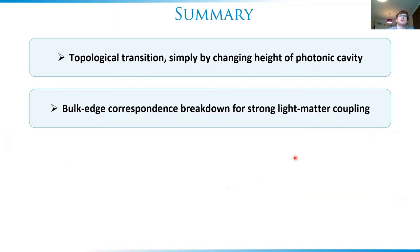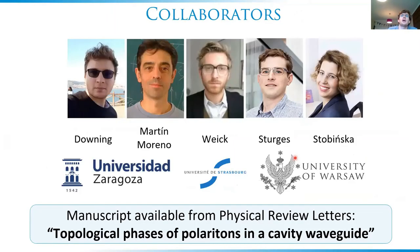To summarize: we've seen a topological transition simply by changing the height of a photonic cavity, without changing the lattice or the properties of the matter system at all, and a breakdown of the bulk-edge correspondence due to strong light-matter coupling. If you're interested in reading the manuscript, you can find it online with the title 'Topological phases of polaritons in a cavity waveguide.' Thank you for your attention and I'll take some questions.